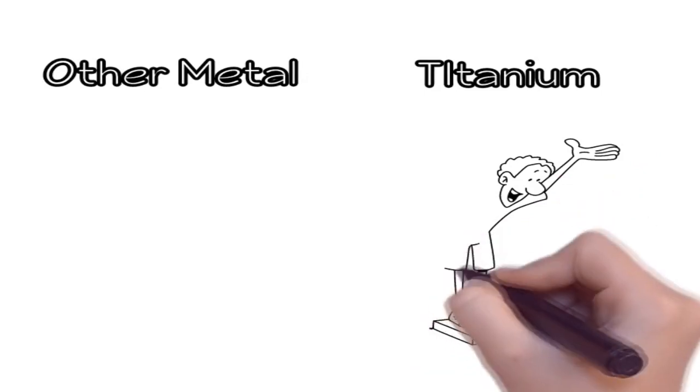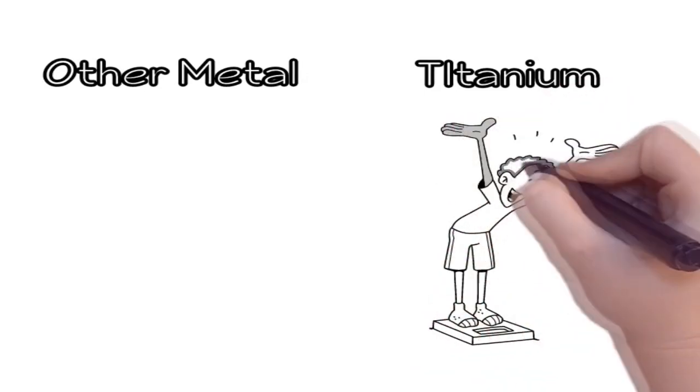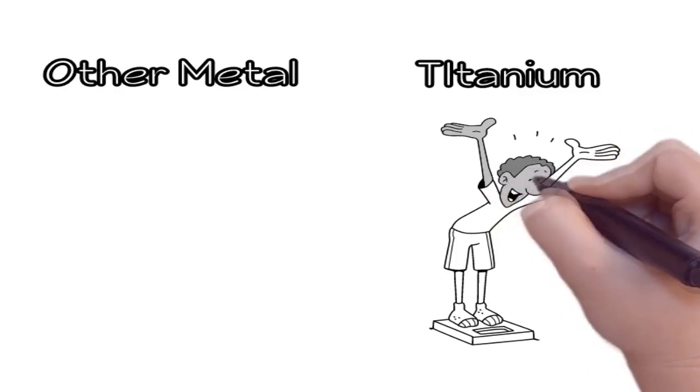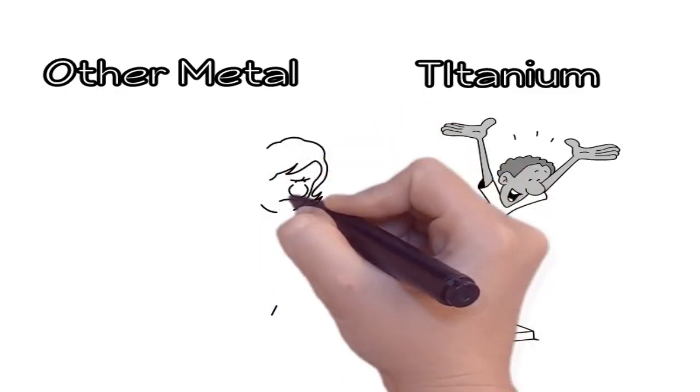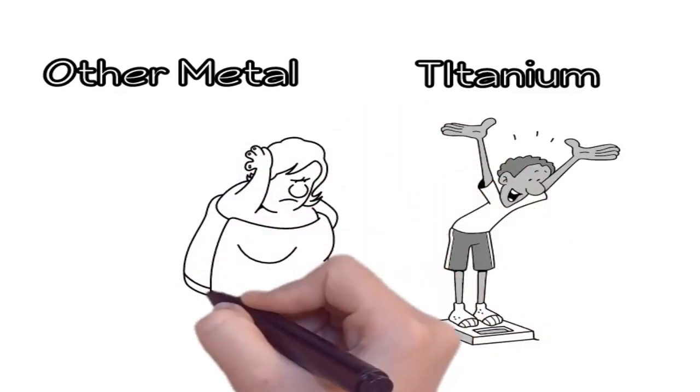Titanium possesses a very low density and high strength. This causes titanium to be much lighter than other metals. In fact, one of titanium's most useful properties is its high strength to density ratio.